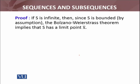Now Case 2: if S is an infinite set, then S is bounded because the original sequence is bounded. So we have a set S which is bounded and infinite. We can therefore apply the Bolzano-Weierstrass theorem, which we proved for the set of real numbers. The Bolzano-Weierstrass theorem states that S must have a limit point x-bar.